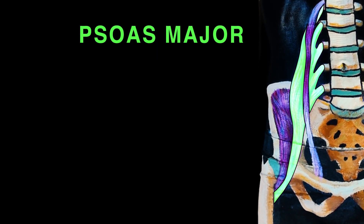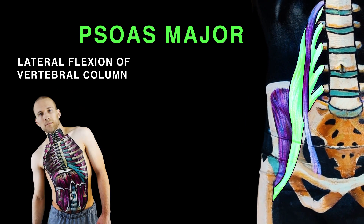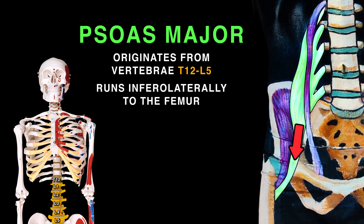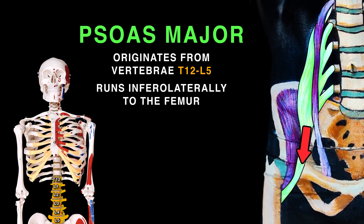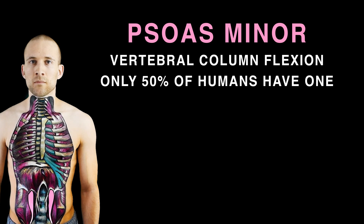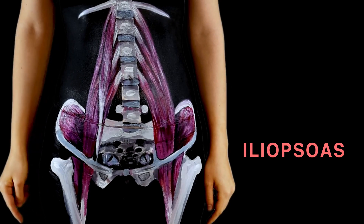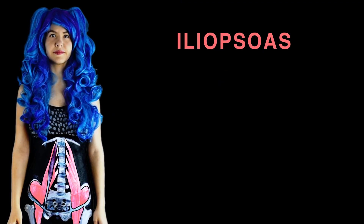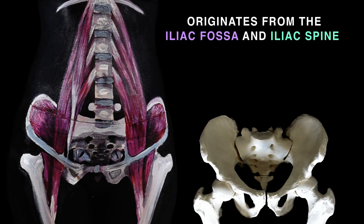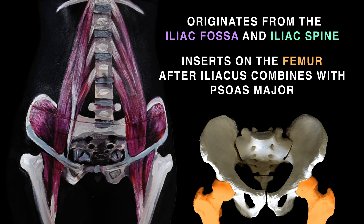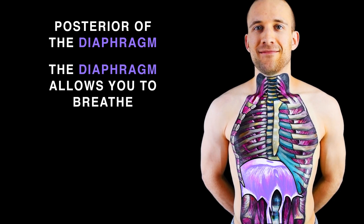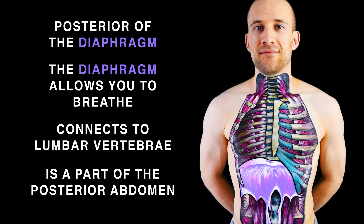The psoas major is near the midline, providing lateral flexion of the vertebrae and thigh flexion at the hip. It originates from vertebrae T12 to L5, running inferolaterally to arrive at the femur. The psoas minor, present in only half of people, causes vertebral column flexion. Iliopsoas forms when iliacus and psoas major are combined, making it a major thigh flexor originating from the iliac fossa and spine, inserting on the femur. The posterior diaphragm connects to lumbar vertebrae and is part of the posterior abdomen.